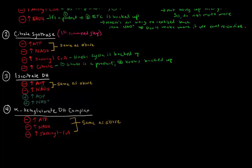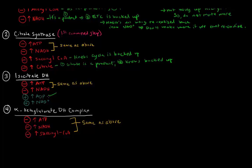Isocitrate dehydrogenase is also inhibited by high levels of ATP and high levels of NADH for the same reasons as citrate synthase and PDH — they indicate high energy levels and backup of the ETC. However, this enzyme also has activators: high amounts of ADP and high amounts of NAD+. High ADP indicates that ATPs have been used up, signaling low energy. If we have low energy, we want to activate the Krebs cycle to make more. So it makes sense that ADP is an activator.